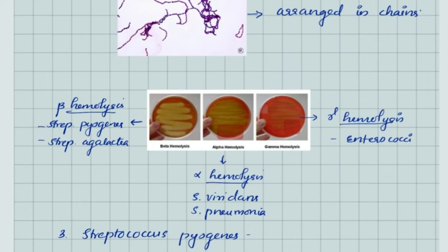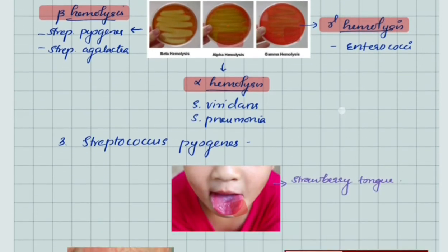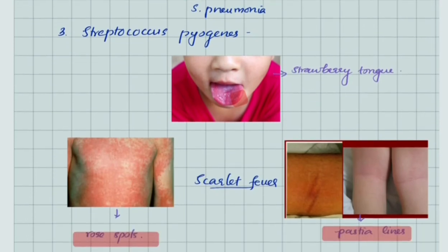Beta hemolysis is complete hemolysis shown by Streptococcus pyogenes and Streptococcus agalactiae. Alpha hemolysis is partial hemolysis where we see greenish discoloration in blood agar, shown by Streptococcus viridans and Streptococcus pneumoniae. Gamma hemolysis is actually a misnomer—there is no hemolysis, shown by enterococci.